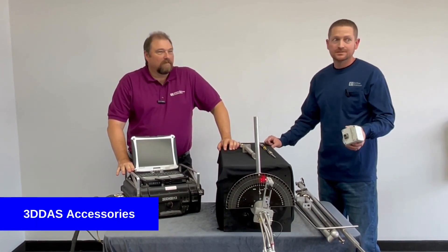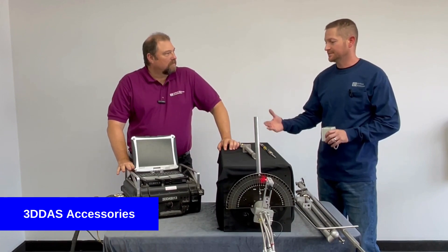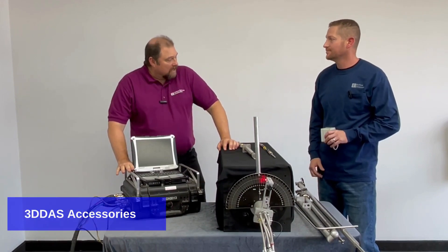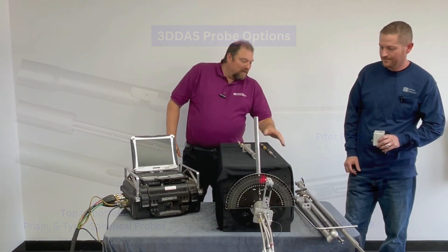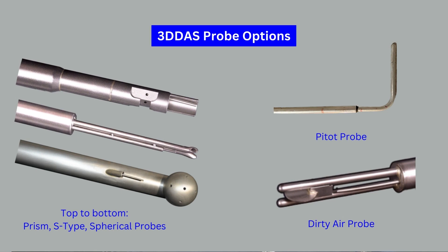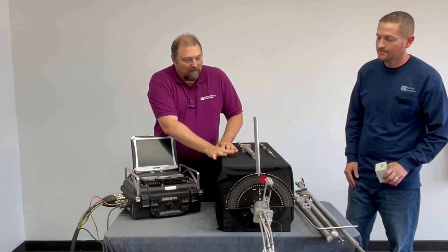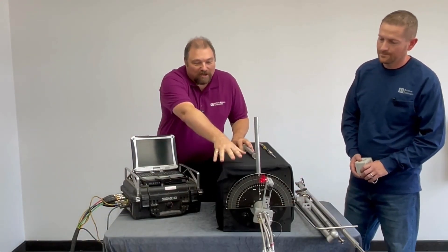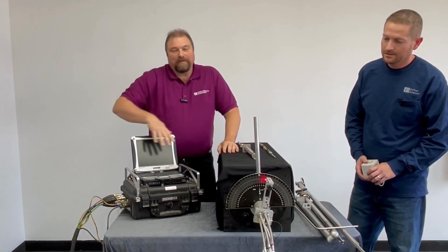Today we're going to be talking about part two of our three-dimensional data acquisition system — the accessories. So, I see we have a bunch of probes on the table. Could you tell me a little bit about them? Yeah, this system can be used with an S-type probe, dirty air probe, spherical probe, pedal probe, or prism probe. My understanding is, inside our example here, we do have a prism probe. Could you tell me a little bit about some of the accessories attached to our prism probe?